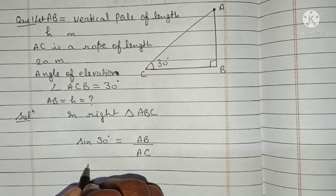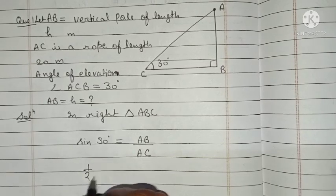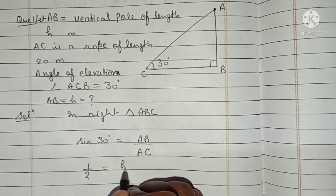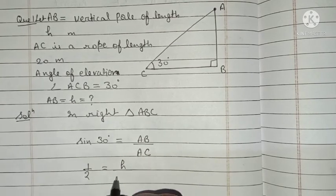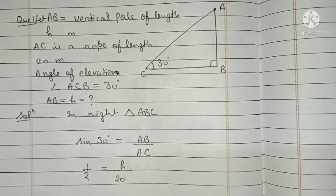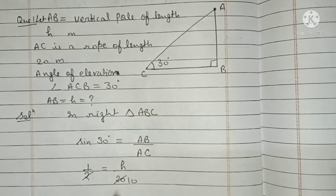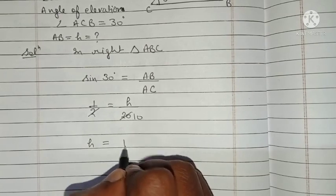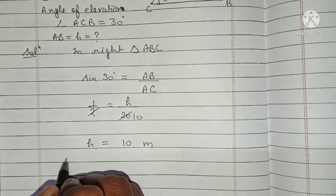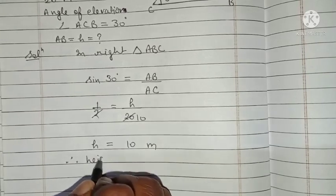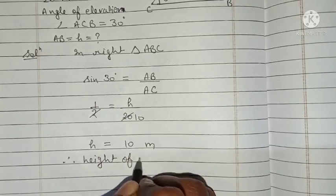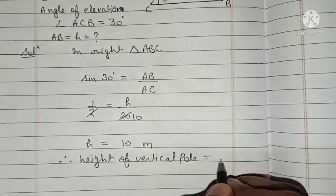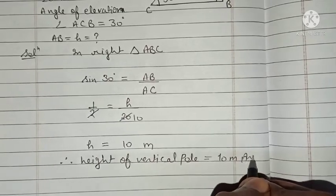Value of sine 30 is 1 by 2. AB is the height h, and AC is the length of the rope, 20 meters. So 1/2 = h/20, hence h equals 10 meters. Therefore, height of the vertical pole equals 10 meters.